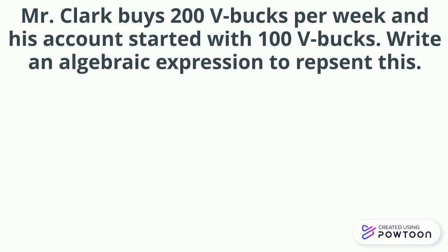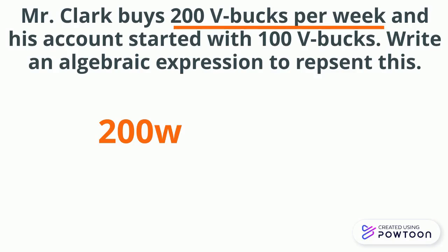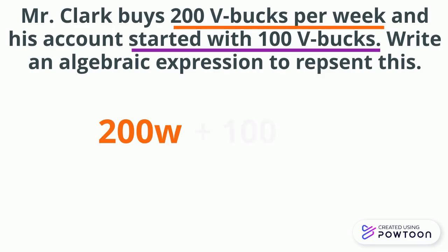Let's look at an example from the world of Fortnite. Mr. Clark buys 200 V-bucks per week and his account started with 100 V-bucks. Write an expression to represent this. The word 'per' tells us that 200 goes with the variable, so we write 200W. He started with 100, so that's our constant. Since he's gaining more bucks each week, we add them: the expression is 200W plus 100.